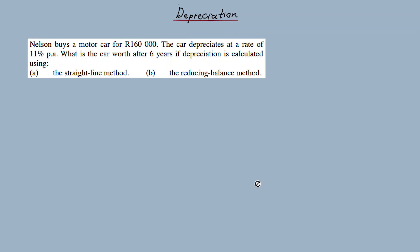Okay, example one: Ellison buys a car for 160,000 rand. This is the present value — the purchasing price P. The car depreciates at a rate of 11%, which is i. What is the car worth after six years? This is n. We calculate using: A) the straight line method and B) the reducing balance method. For A, the straight line, we want to calculate the depreciated value A — the scrap value.